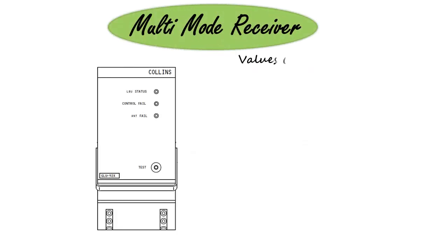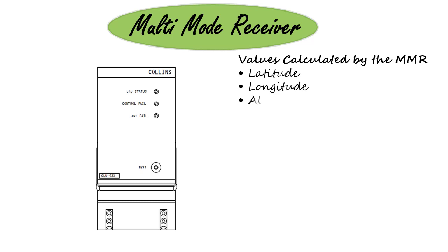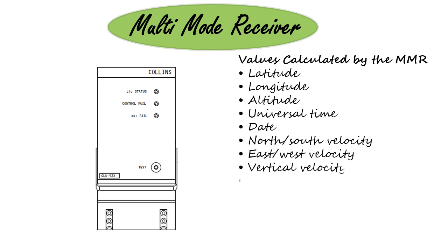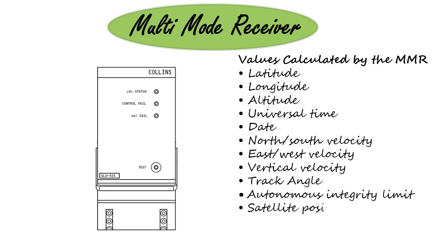The MMR uses satellite data to calculate the latitude, longitude, altitude, universal time, date, north-south velocity, east-west velocity, vertical velocity, track angle, autonomous integrity limit, satellite position, and MMR status.